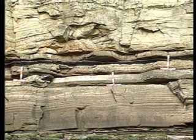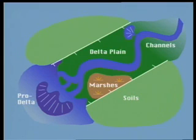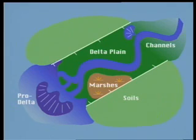These sediments were deposited in a deltaic environment, which might have looked something like this. Fine-grained sands were deposited in a shallow marine pro-delta setting. These were then overlain by coals and channel sands laid down in the delta plain. Episodic movement of faults affected sedimentation, changing water depths and giving rise to soil horizons on uplifted blocks.